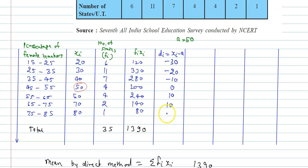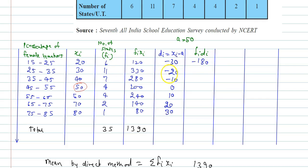Continuing: for Xi = 70, di = 20, and for Xi = 80, di = 30. Now we calculate FiDi — the product of each deviation and its corresponding frequency. So: 6×(−30) = −180, 11×(−20) = −220, 7×(−10) = −70.